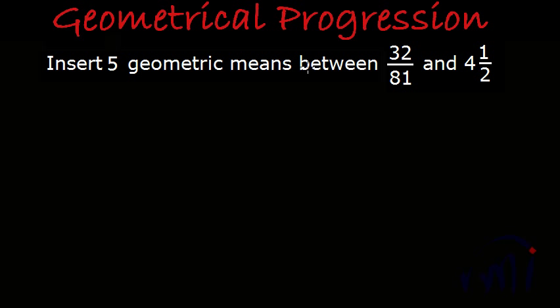We have one more problem on inserting geometric means between two given numbers. In this case, we have to insert five geometric means between 32/81 and 4.5.